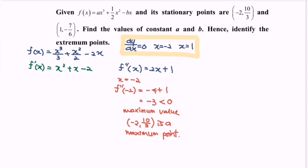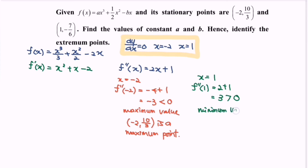Next, testing x equals one: f double prime of one equals two plus one equals three, which is greater than zero. So x equals one is a minimum value, and the point (1, -7/6) is a minimum point.